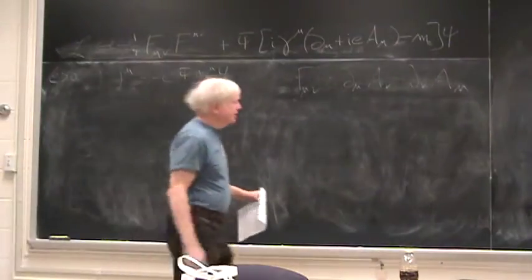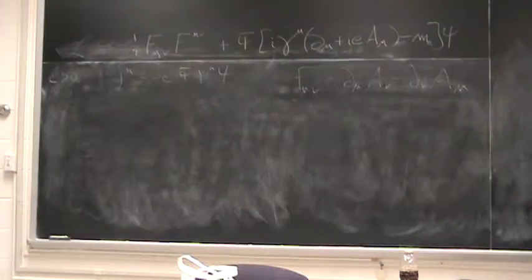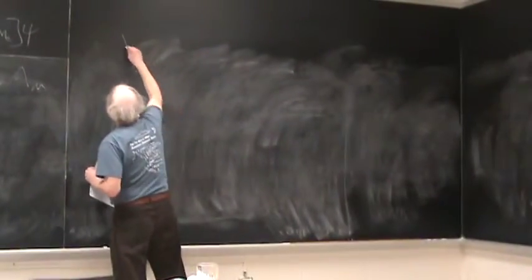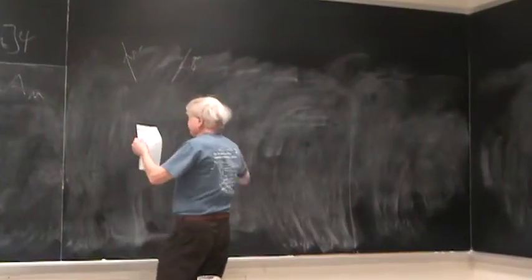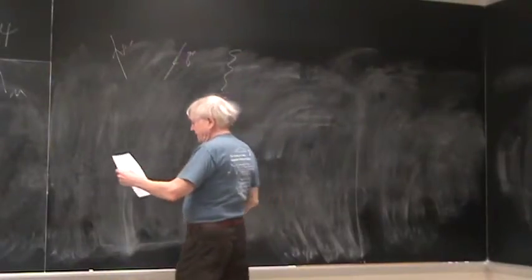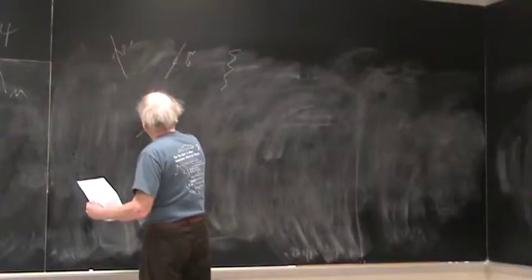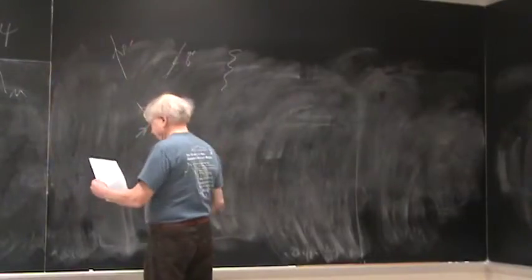Alright, so now what are these Feynman rules? I'm going to go over here where the board is higher quality. So let's imagine we've got some process. We draw the diagram and it's got some outgoing particles.